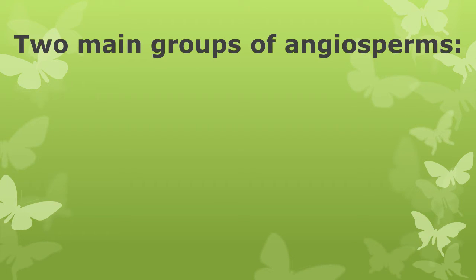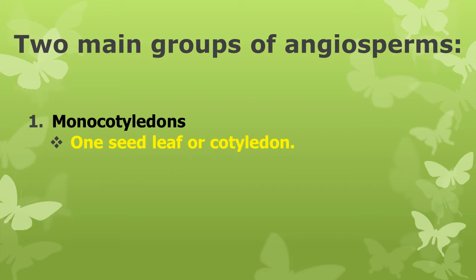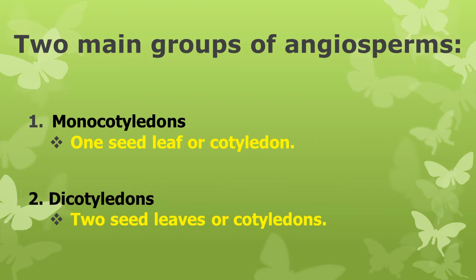There are two main groups of Angiosperms. First, Monocotyledons — these are Angiosperms with only one seed leaf, or one cotyledon. Second, Dicotyledons.